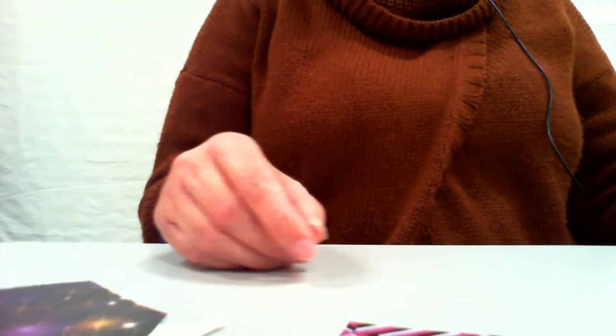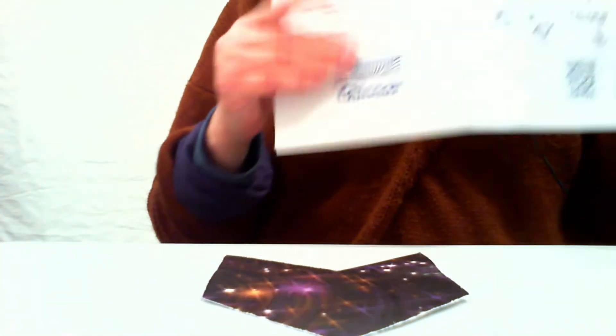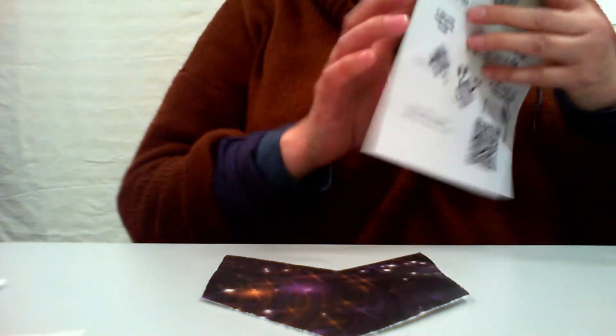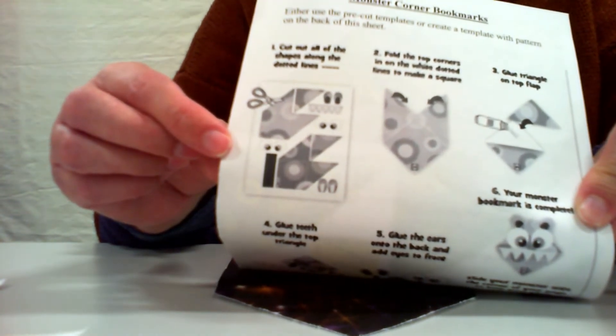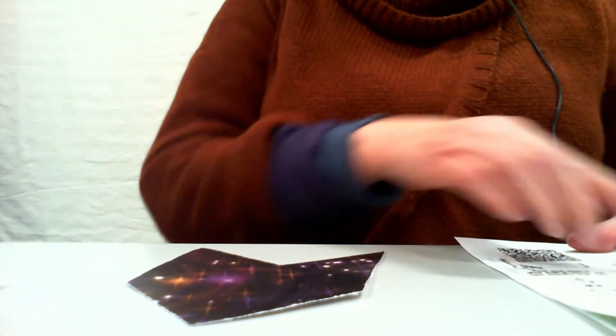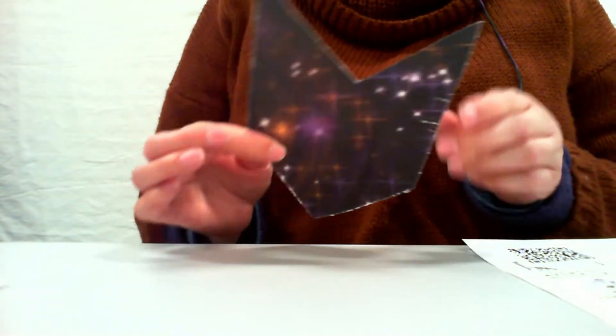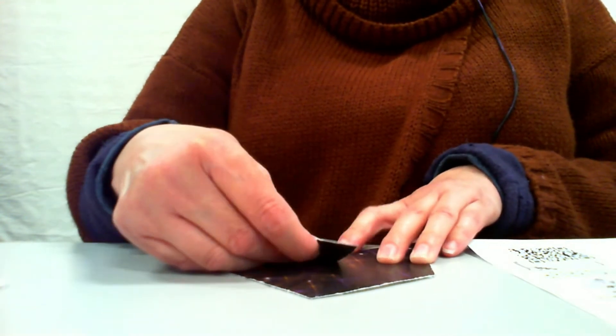Okay, so this is my first template. And what I'm going to do is follow these instructions that you have here. These instructions are a little different than how I make my monster bookmarks, but I'll show you both ways. So the first step, of course, is to cut out your template. And then it says to fold your template like this.